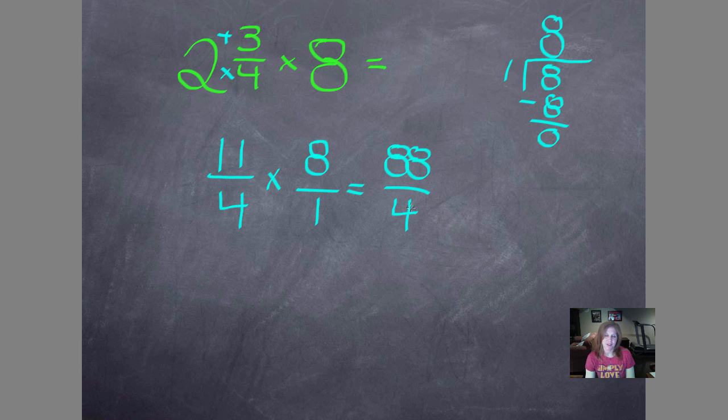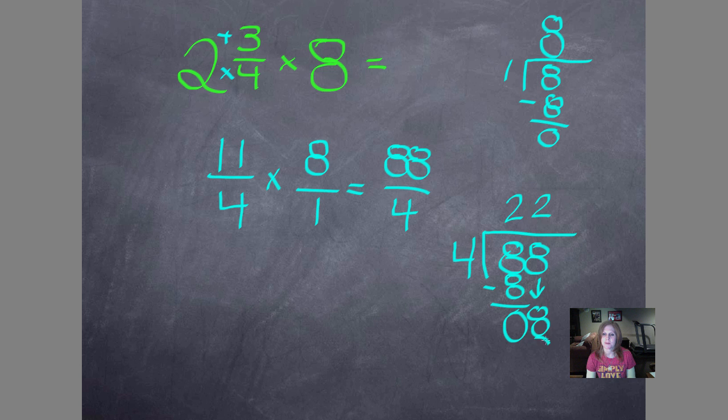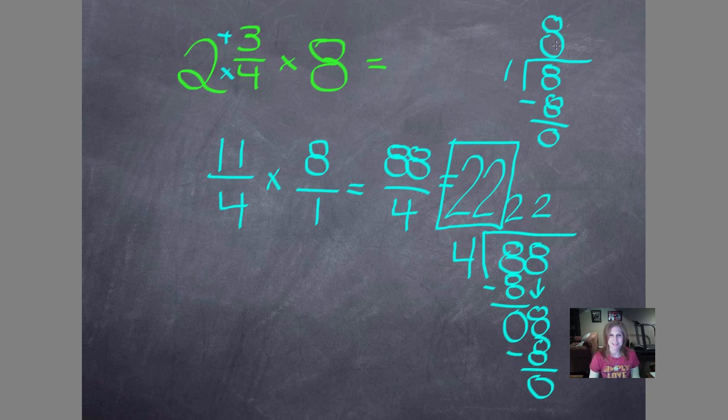Now I'm going to multiply. 11 × 8 = 88, and 4 × 1 = 4. I know I have an improper fraction here. I could have guessed that because I know I have two whole numbers, so I'll have a whole number in my answer. I'm going to send 88 home into the house. 4 goes and knocks on the door. 4 goes into 8 two times. 4 × 2 = 8. 8 - 8 = 0. Bring down my other 8. 4 goes into 8 two times. 4 × 2 = 8. 8 - 8 = 0. I have no remainder, so I have no fraction. Twenty-two, the whole number, is my final answer. Box it so it doesn't get mixed up.